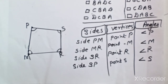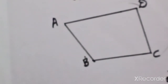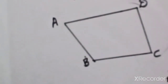So far we have seen what a quadrilateral is, its different parts - what are its sides, angles, and how to do naming. In the next video, we will see some other concepts of quadrilaterals like opposite sides, adjacent sides, etc. See you in the next video. Bye.